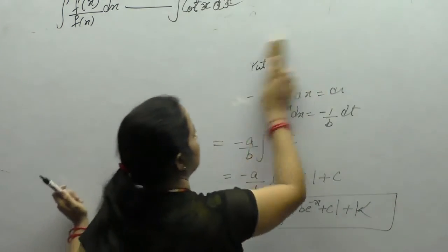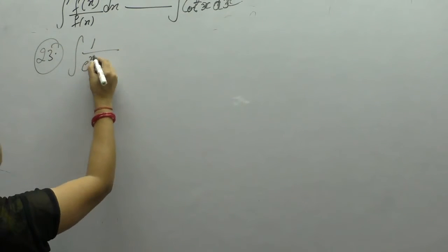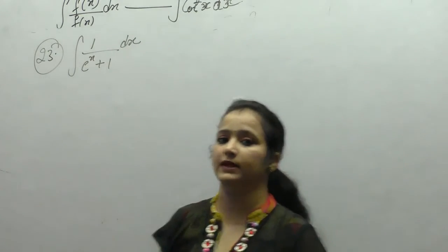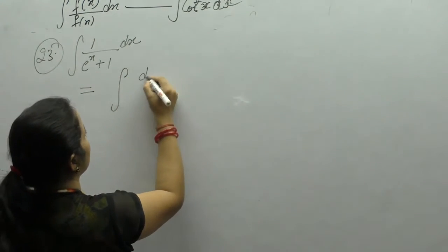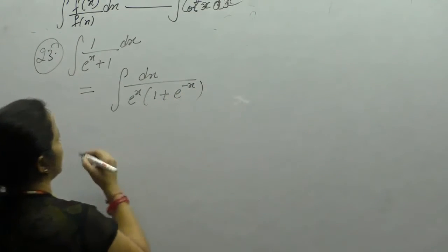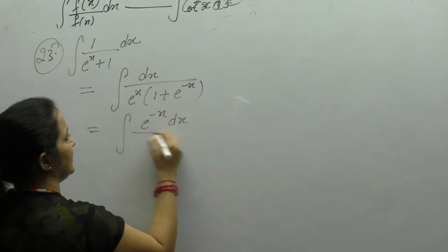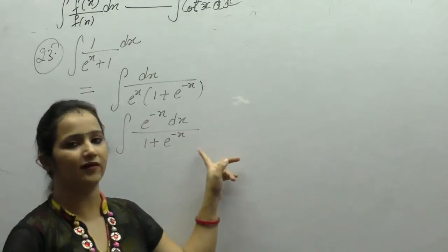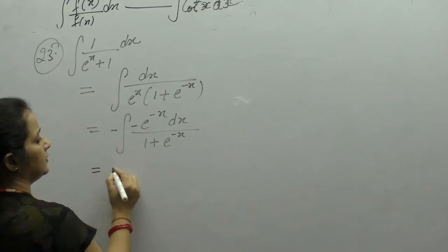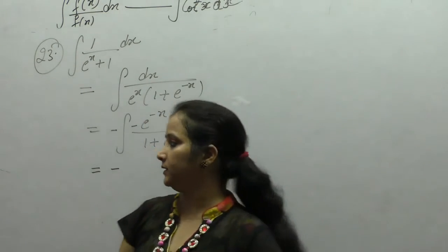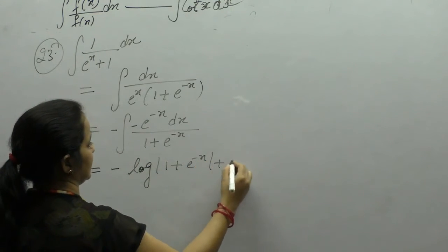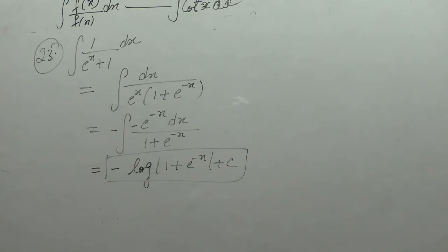Question 23: integral of 1/(e^x + 1). The derivative of e^x is e^x and derivative of 1 is 0, but we don't have e^x in the numerator. So we take e^x common from the denominator to get e^x(1 + e^(−x)), and write the numerator as e^(−x). The derivative of e^(−x) is −e^(−x), so we take the minus sign out. Applying f'(x)/f(x) = log(f(x)), the answer is −log(1 + e^(−x)) + c.